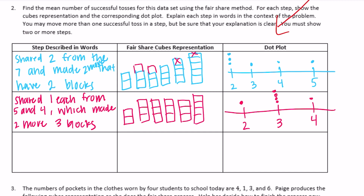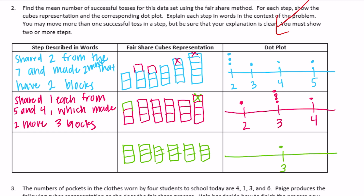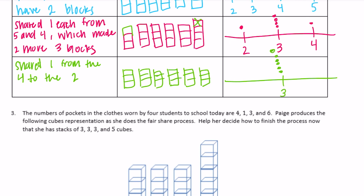I'm going to take one from the four and add it to the two, so we now have six threes. There's our dot plot showing all threes. I shared one from the four to the two, and now it's all a fair share — everyone has three. So the mean is three.